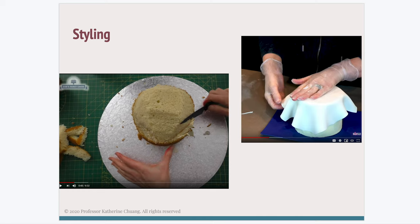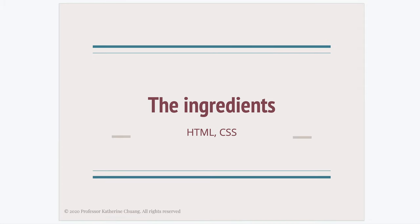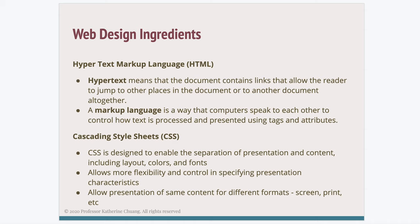Now that we have a framework for the two general workflows, I want to go into a more detailed description of HTML and CSS. The ingredients for web design include HTML and CSS — you might have a few other things like JavaScript, but that's for a different lecture. HTML stands for Hypertext Markup Language and refers more to the structural components of a web page, whereas CSS stands for Cascading Style Sheets and is focused on the styling and presentation of websites.